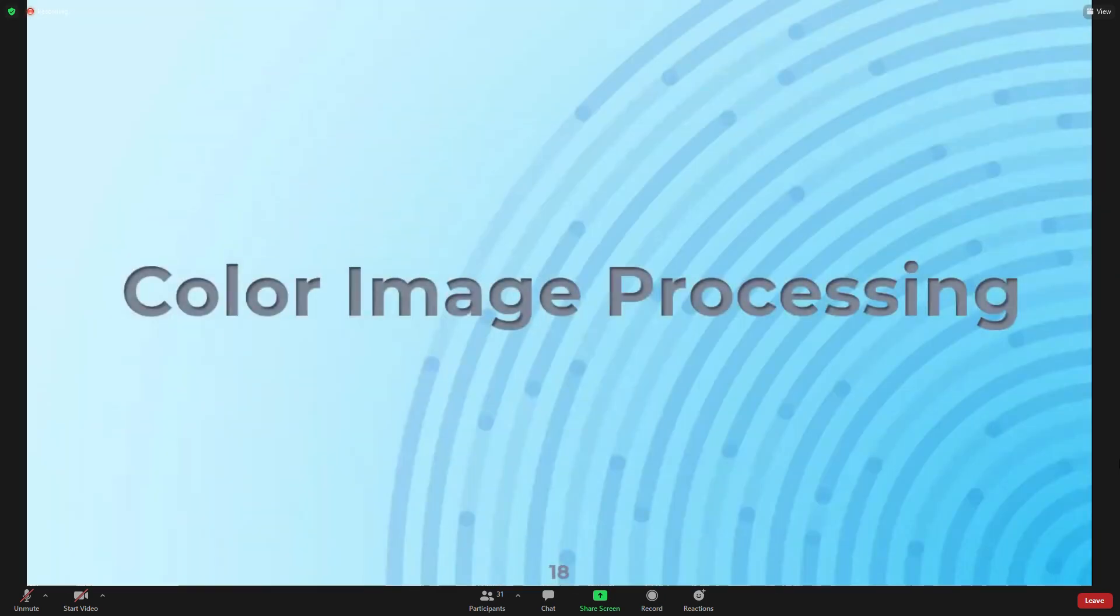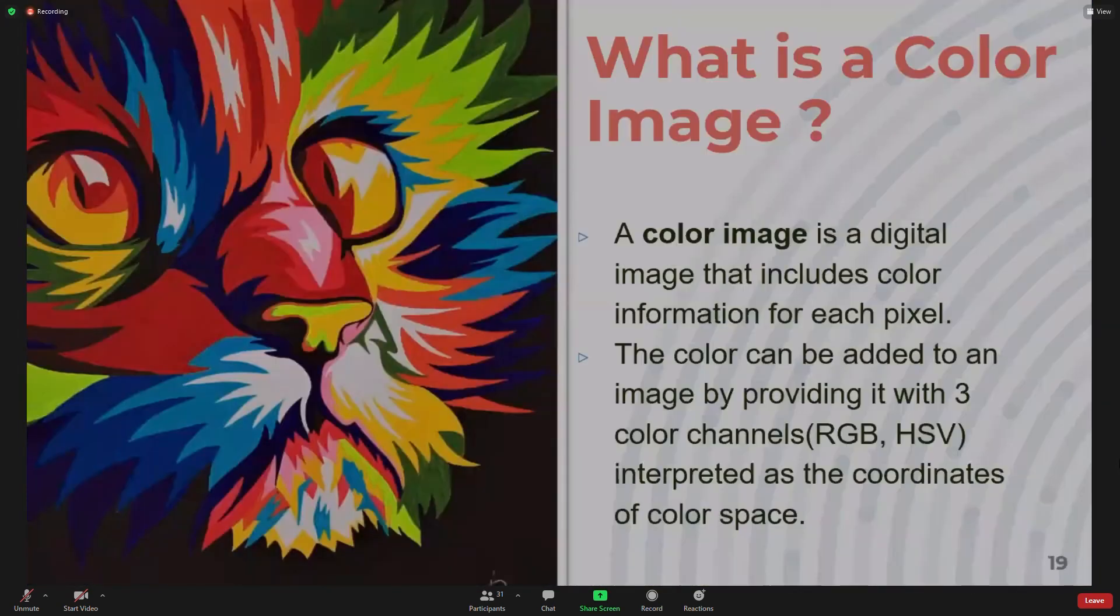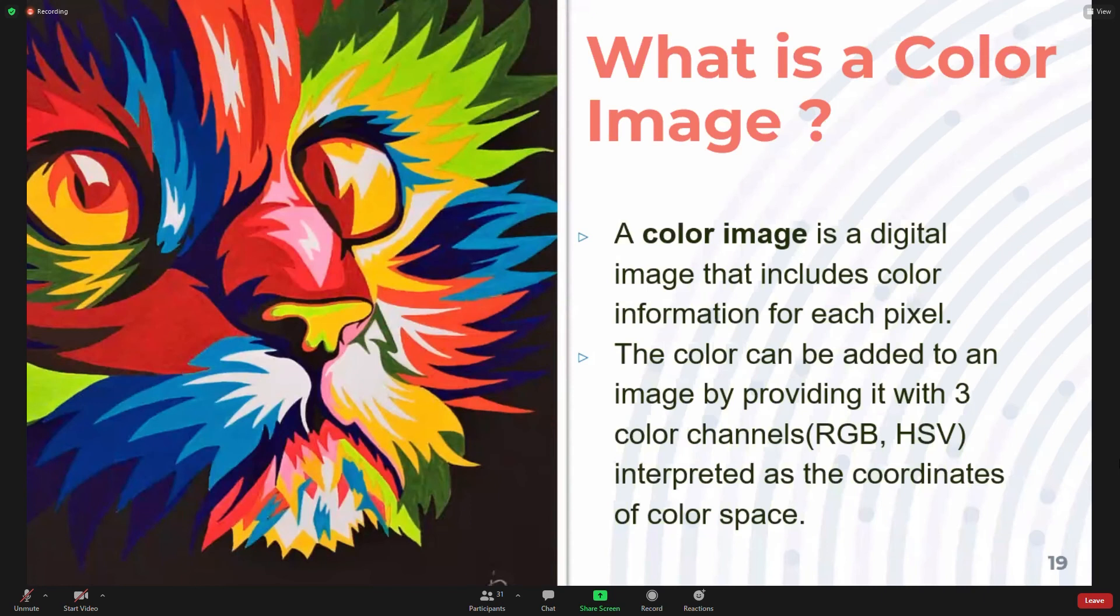Let us know what a color image is. A color image is a digital image containing color information in its pixels. The color is applied to image by providing it with three channels: RGB, HSV, interpreted as coordinates of color space. Usually, computer displays have RGB color space.